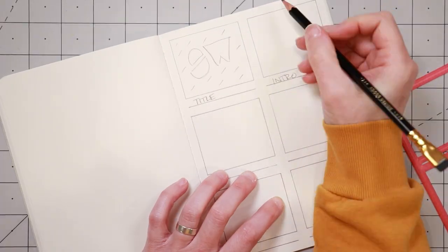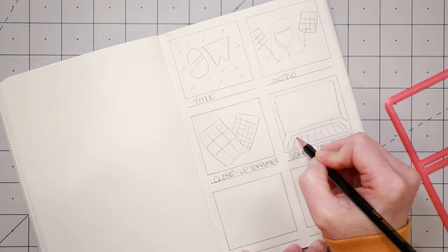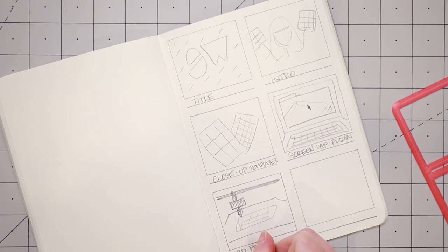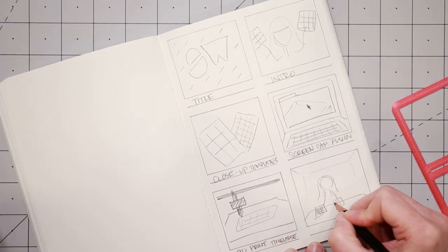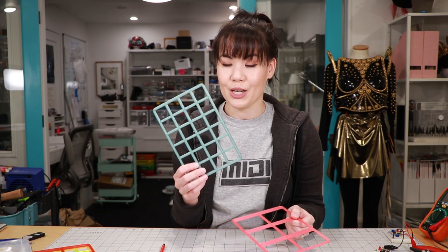Now using the storyboard template is pretty straightforward. You can draw out the frames or scenes of your animation or movie, and it's really useful when scripting or building a narrative. I find that these are also really helpful for planning presentation slides. But you might be wondering why I want to draw tons of little squares in my sketchbook.